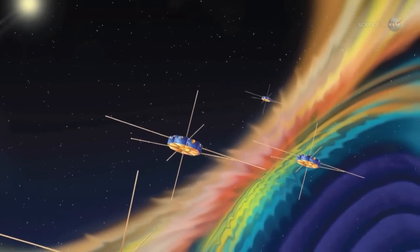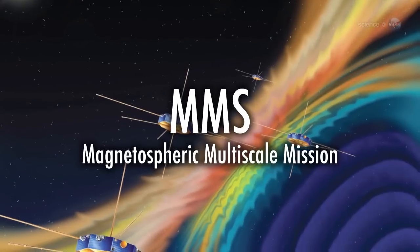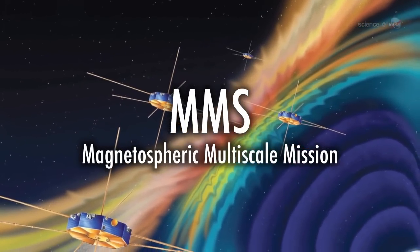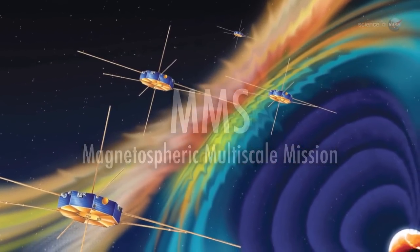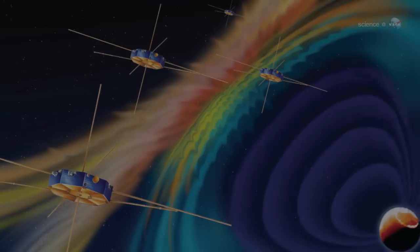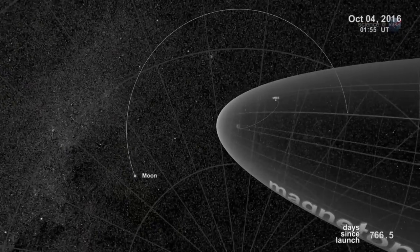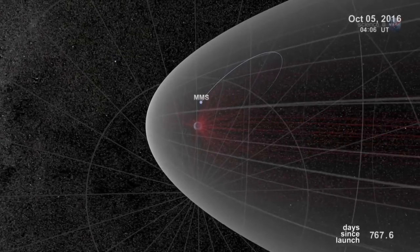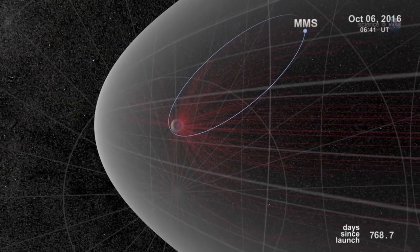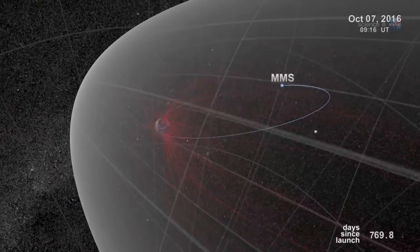NASA is planning a mission called MMS, short for Magnetospheric Multiscale Mission, due to launch in 2014 to study the phenomenon. Bristling with energetic particle detectors and magnetic sensors, the four spacecraft of MMS will spread out in Earth's magnetosphere and surround the portals to observe how they work.